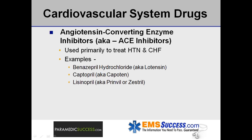ACE inhibitors, or angiotensin-converting enzyme inhibitors, are a group of pharmaceuticals used primarily in the treatment of hypertension and congestive heart failure. Examples include benazepril hydrochloride, also known as Lotensin; captopril, also known as Capoten; and lisinopril, also known as Prinivil or Zestril.